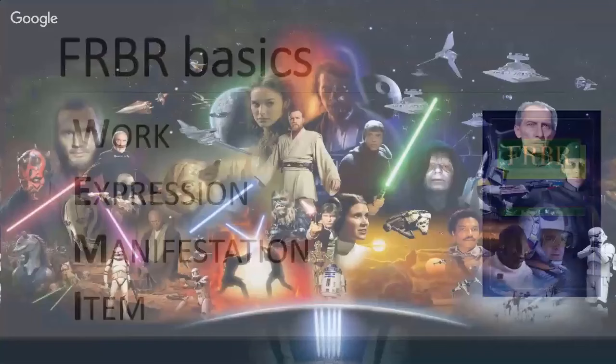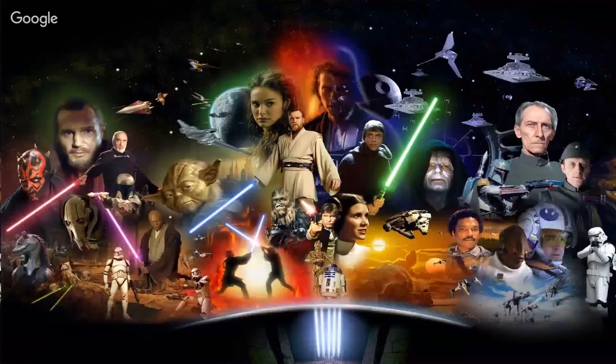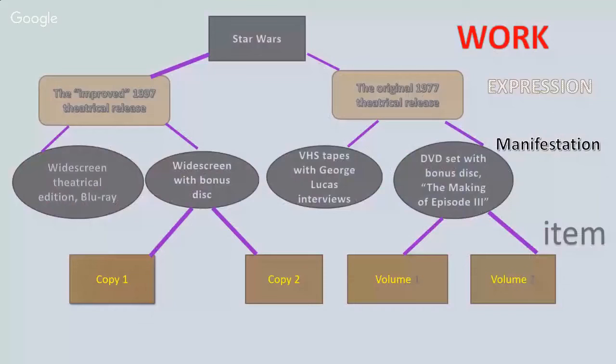To get a grasp on these concepts, we're going to think of the Star Wars universe and all the various materials we may have in our libraries. With FRBR, an author or creator imagines, develops, and creates a work — in this case, Star Wars. That work is then realized by an expression of that intellectual effort. Working from the top down, the work is on top and the expression is the embodiment of the work — for example, the 1977 original release of the movie.